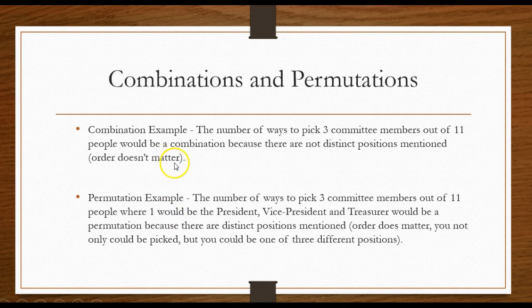Combinations and permutations. Here's a quick example of a combination. The number of ways to pick three committee members out of 11 people would be a combination, because they do not note distinct positions.